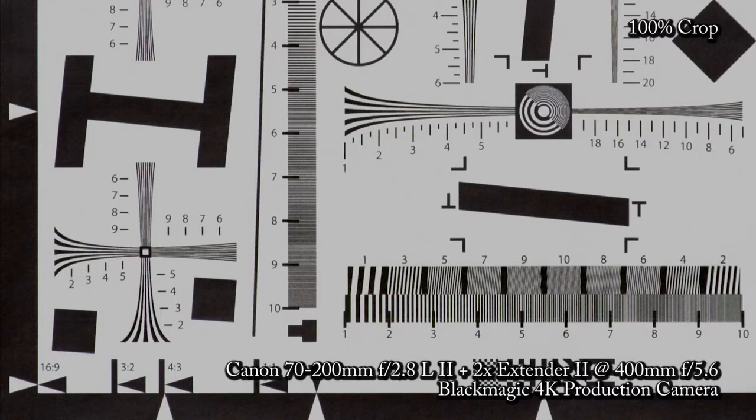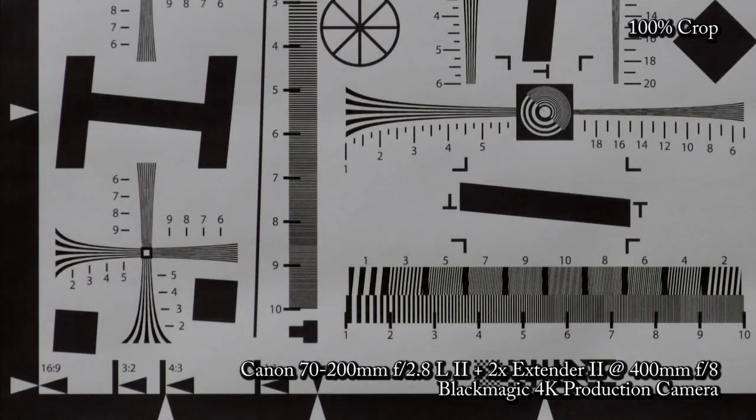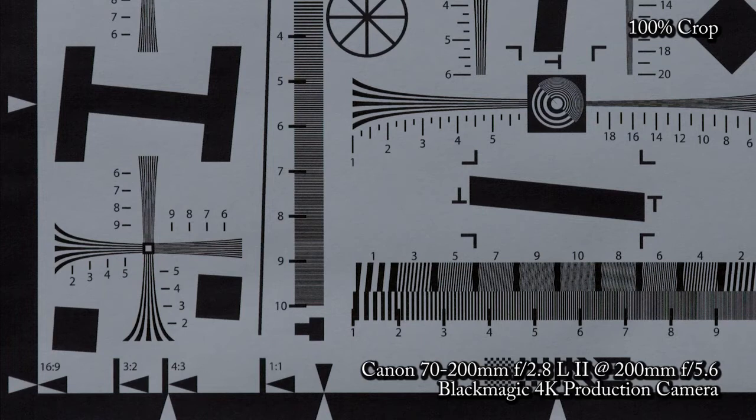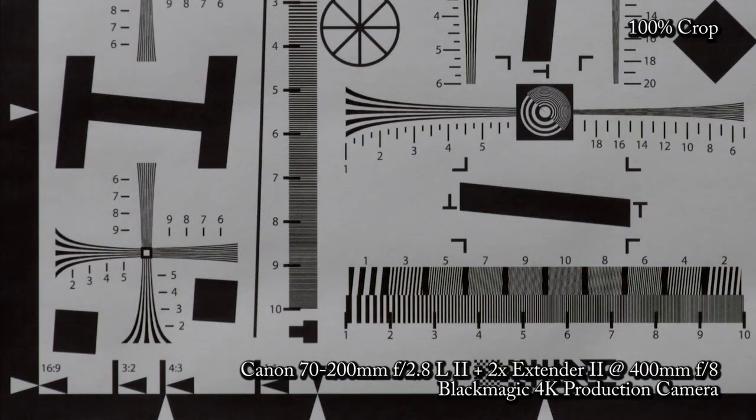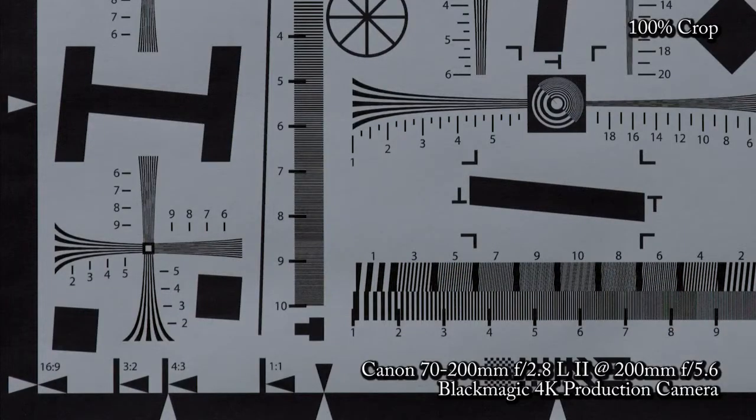As you'd expect with the 2x extender on it the quality suffers. It's not quite as bad when stopped down to f8 but once you see it at 200mm without the extender again you quickly realize just how hugely it impacts the image quality. I believe the third version of the extender has improved things a little but it still should be a last resort when you just can't get the shot otherwise.